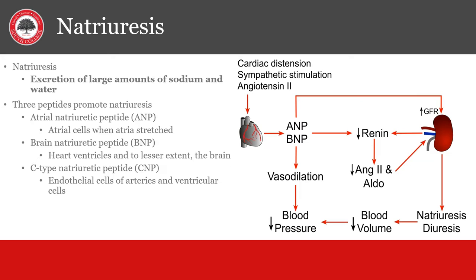Natriuresis is like diuresis with a loss of water, but also the loss of salt or sodium. There are proteins made in the body and released from the heart and blood vessels that can help lower blood volume when it gets too high. In the case of heart failure, this system is not as effective, but we can use the elevated BNP to help us make the diagnosis if we are confused between COPD or CHF. Both ANP and BNP released from the heart will increase GFR and initiate natriuresis, which will lower blood volume and therefore blood pressure.